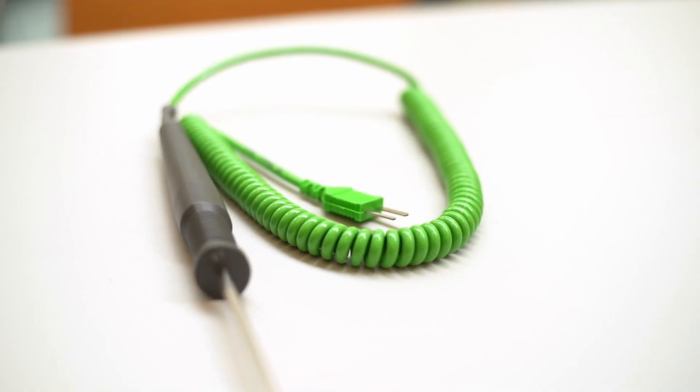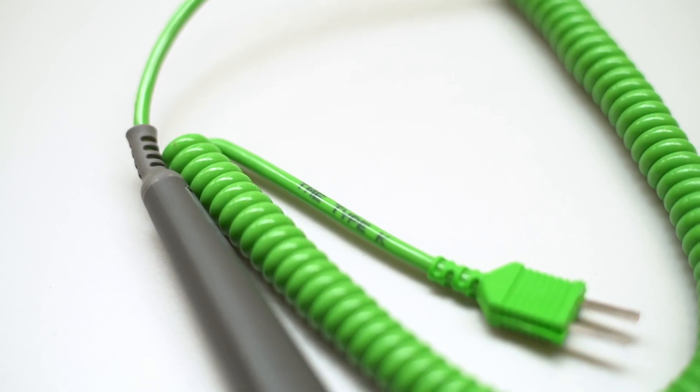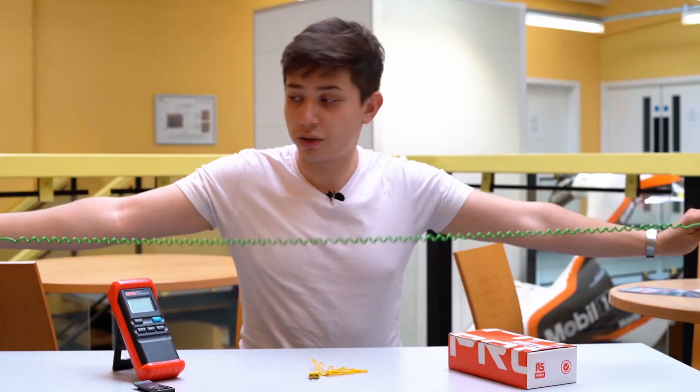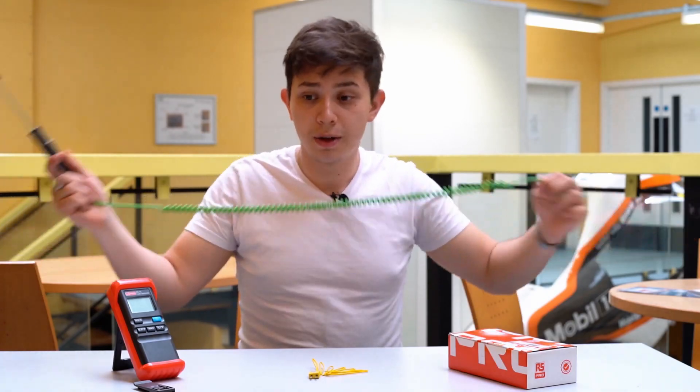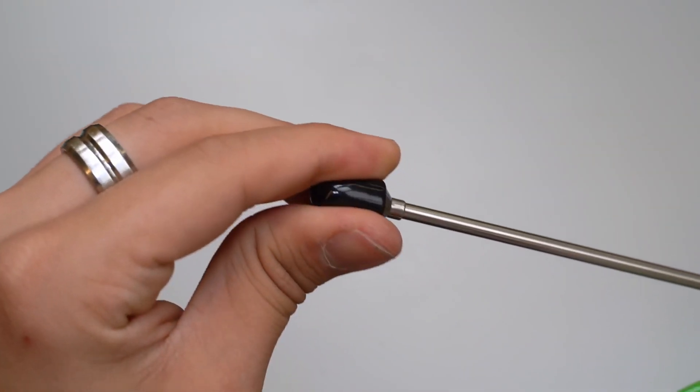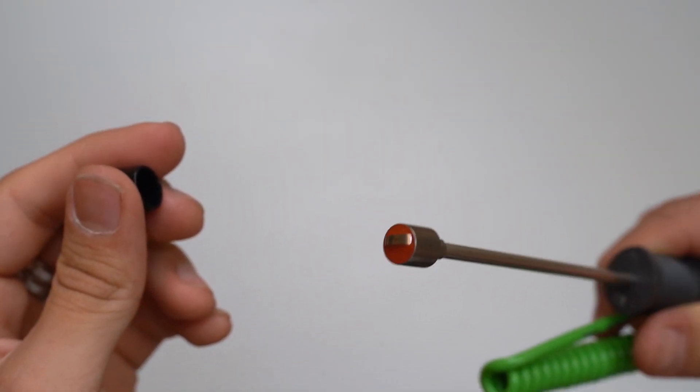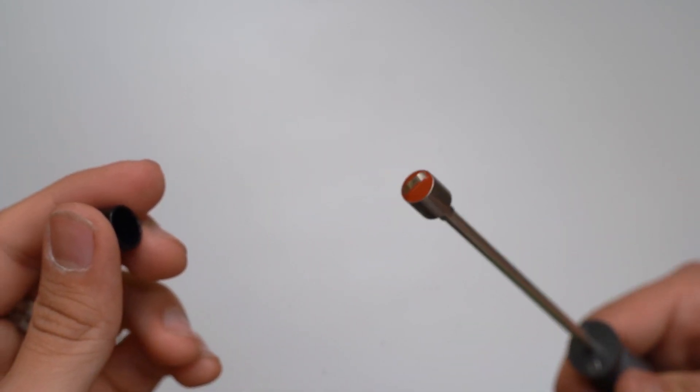The kit also comes with a multi-purpose Type-K and Type-T Thermocouple. It has a coil cable that stretches just over a meter. It also has a protective tip for the thermocouple itself to avoid it breaking and making it last a longer time.